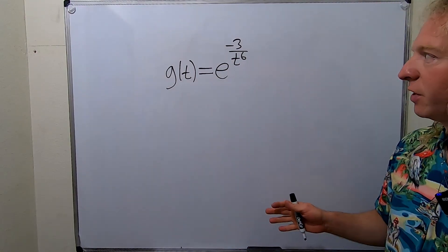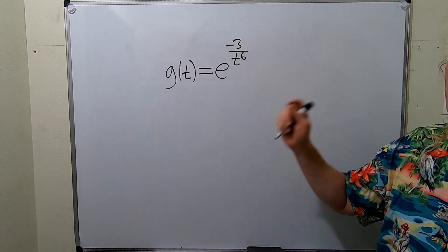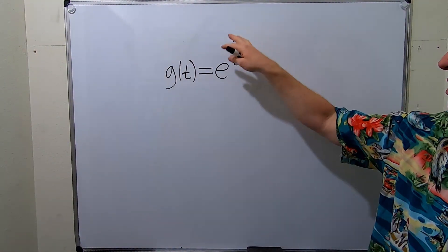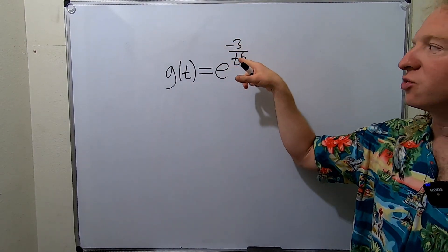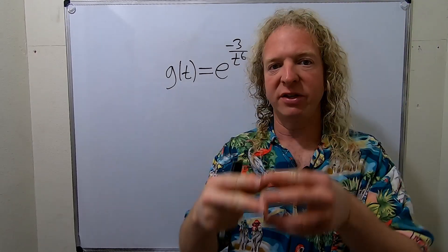In this video we're going to differentiate this function. Before we do that, we're going to rewrite it. Remember, the derivative of e to the x is e to the x. Here it's e to something else, so when we take the derivative we basically write this and then we have to multiply by the derivative of the inside function.